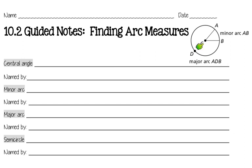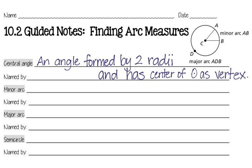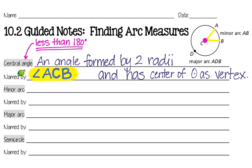We have Randolph standing at the center of the circle at point C, and we have two endpoints on the circle — A and B — as the endpoints of the central angle. A central angle is an angle formed by two radii, and has the center of the circle as its vertex. It's important to note that the central angle is less than 180 degrees. If Randolph started by looking at the food dish, spun all the way around, and then looked at Rudy, that's not a central angle. The central angle always has a measure of less than 180 degrees — that's what makes it a central angle.